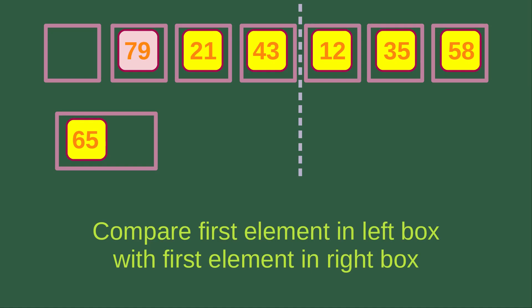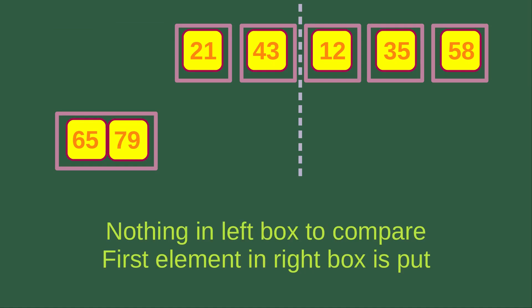The left box has nothing, and the right box has 79. In this case, we have nothing in the left box to compare, so the first element in the right box is put into the merging box. Now the larger merging box has two numbers in ascending order already.